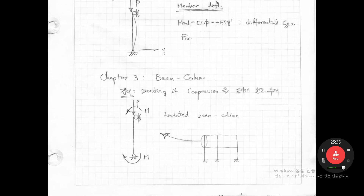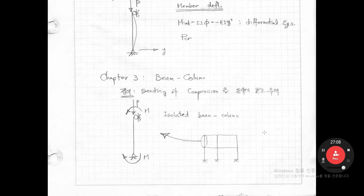Chapter three is beam-column. The definition of beam-column — a term made by Professor WF Chen — means the member subjected to both bending and compression. So this member is subjected to compression and bending moment simultaneously. If we consider a real frame, we isolate the column, apply axial load and bending moment, and solve the problem under those boundary conditions.